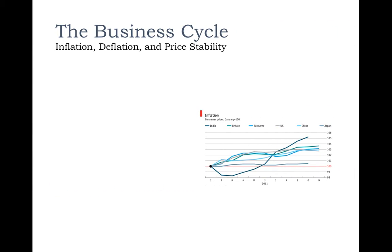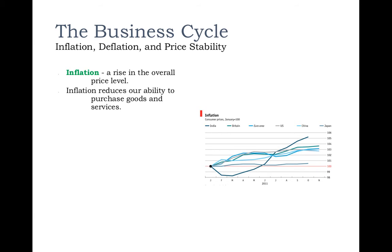Inflation, deflation, and price stability: one of the main goals most economies want is stable prices. Inflation is a rise in the overall price level — this doesn't mean every single price is rising; some might go up and some might go down, but overall prices are going up. When things are more expensive, we can't buy as much as we used to. Deflation is a fall in the overall price level, and we'll discuss how we measure the overall price level in more detail soon.